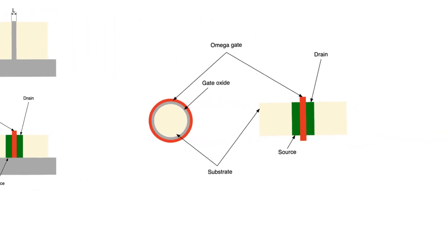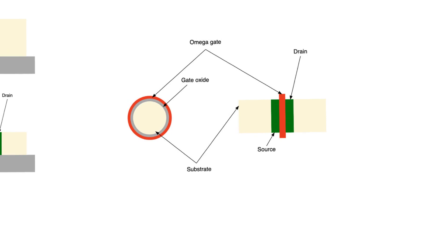Ultimately if you can create a structure like this which is a tube then that would be the ultimate control. Now the gate is surrounding the channel on all directions and the drain has nowhere through which it could couple to the channel. Now this is a good idea but the problem with it is that it doesn't provide mechanical support for the transistor like the other approaches do.